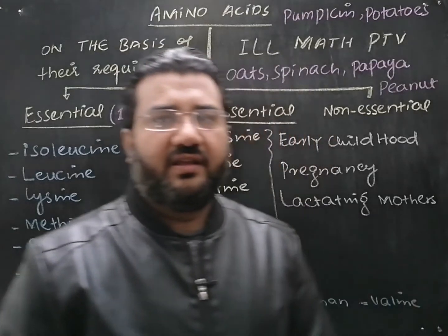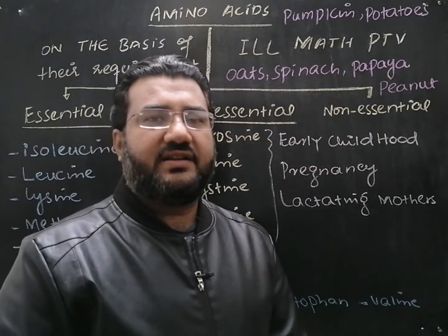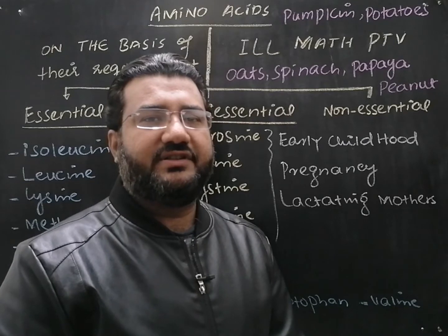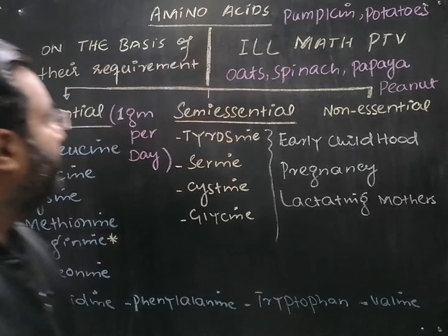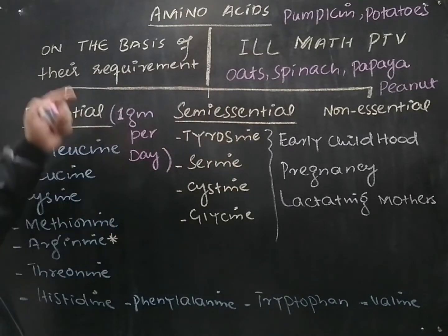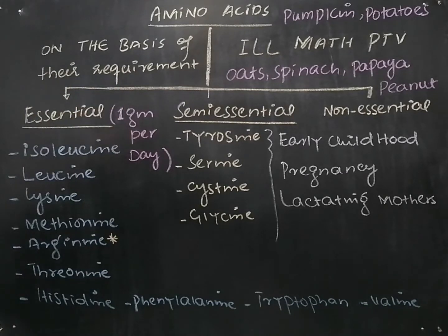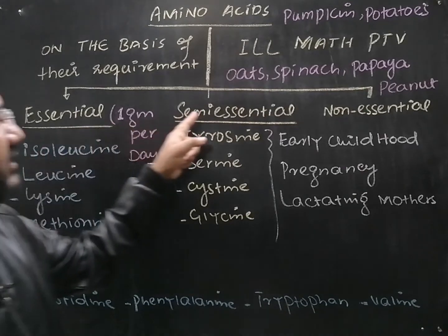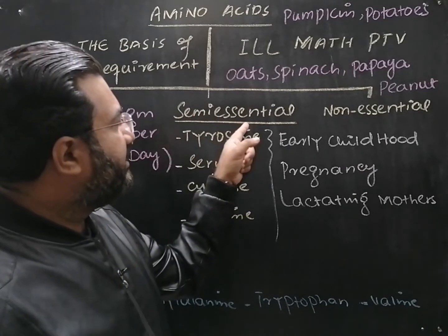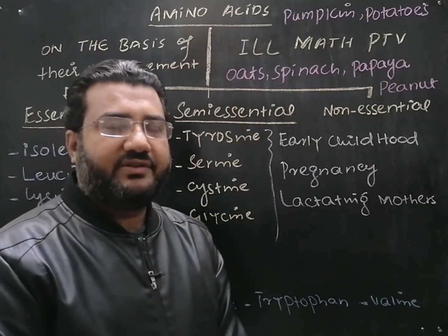Dear students, now we are going to discuss the classification of amino acids based on their requirement. On the basis of requirement, amino acids can be classified into three classes: essential amino acids, semi-essential amino acids, and non-essential amino acids.